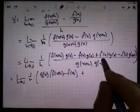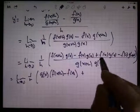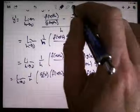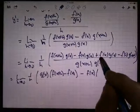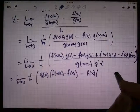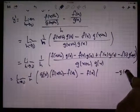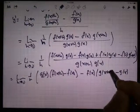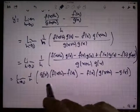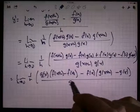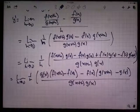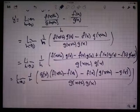And then from here, I'm going to factor out a minus f of x. So that's going to make this first one negative and I'll write it over here. It's going to make that one positive, so I'll write it over here. And I've still got the denominator.